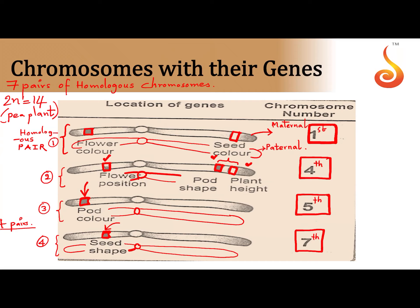These are the locations of those seven contrasting traits which Mendel studied — the genes which control those seven pairs of contrasting traits. You can see that they are not present on all seven homologous pairs; they are located on the first pair, the fourth pair, the fifth pair, and the seventh pair. This is an important competitive exam question: on which chromosomes are the genes controlling Mendel's traits located? It is not all seven pairs — it is only four out of seven: the first, the fourth, the fifth, and the seventh pair.